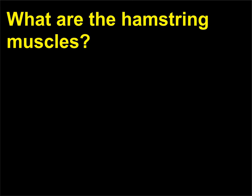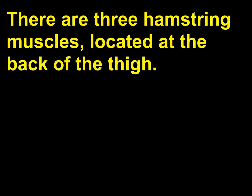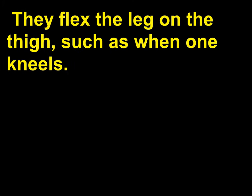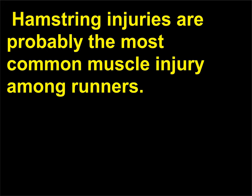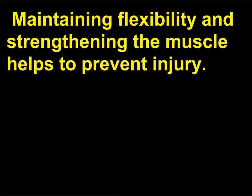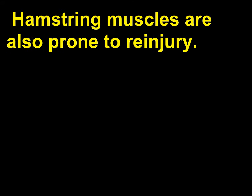What are the hamstring muscles? There are three hamstring muscles, located at the back of the thigh. They flex the leg on the thigh, such as when one kneels. They also extend the hip whenever one, for example, sits in a chair. Hamstring injuries are probably the most common muscle injury among runners. Maintaining flexibility and strengthening the muscle helps to prevent injury, as hamstrings are also prone to reinjury.